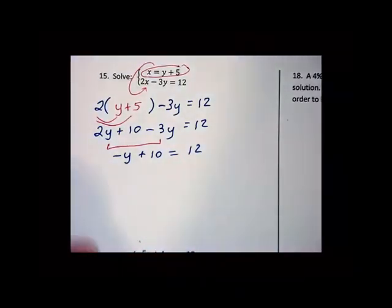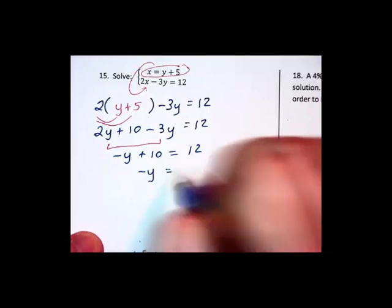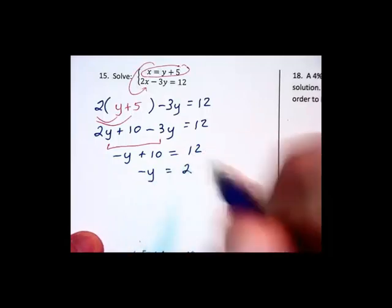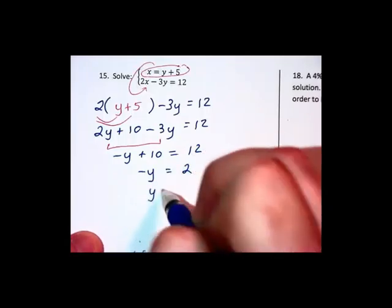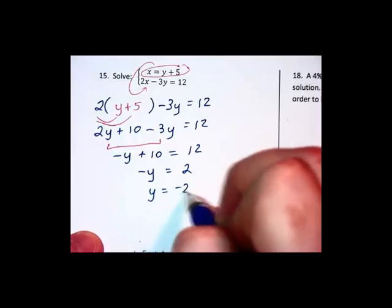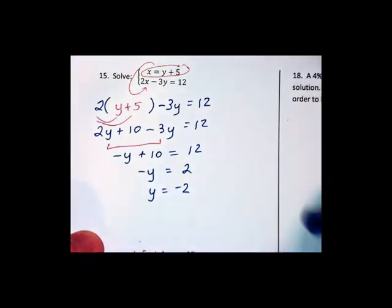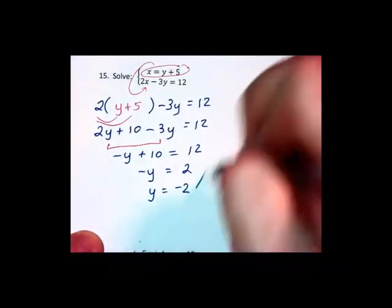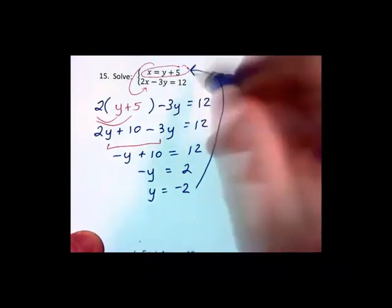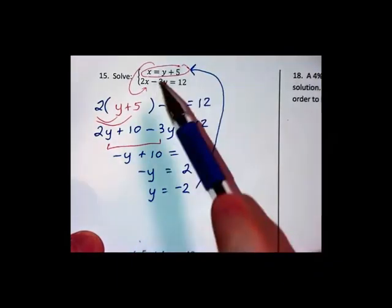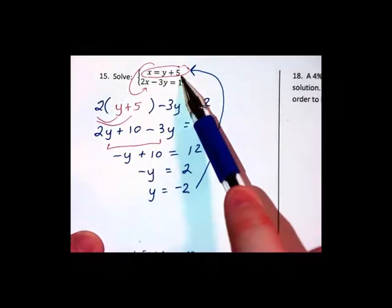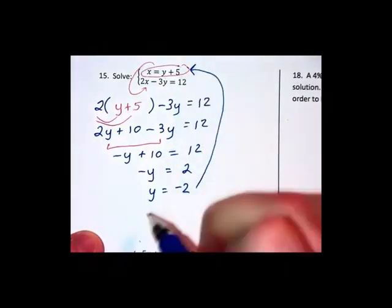We're going to subtract 10 on both sides, leaving the negative y on the left. Subtracting 10 gives us 2. And dividing each side by negative 1 gives us a negative 2 on the right. We now need the partner value, the x that goes with this. I'm going to substitute into the top row here. Negative 2 for y plus the 5 gives us 3 for x. So x will equal 3 in that problem.